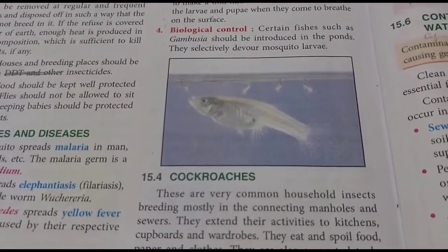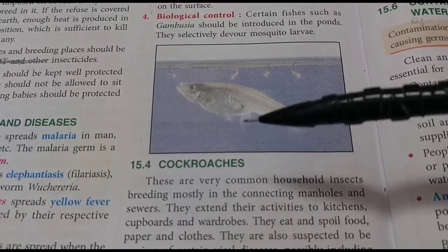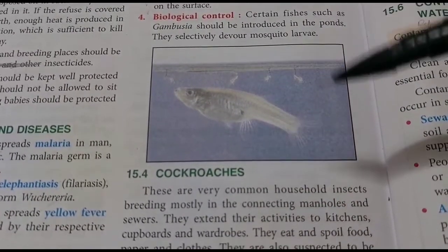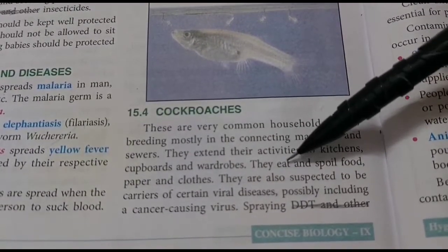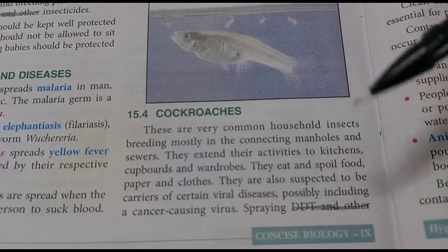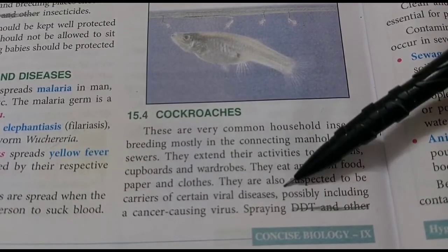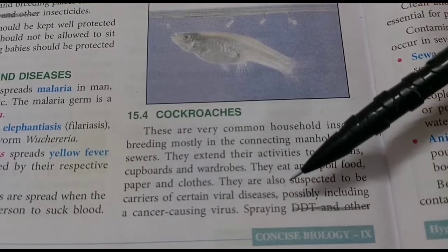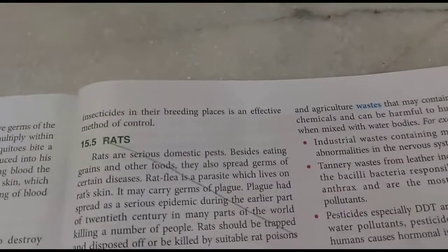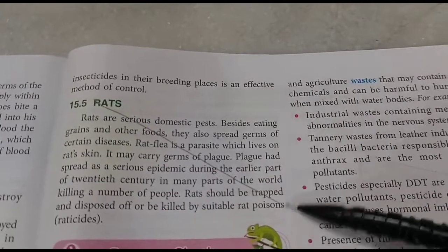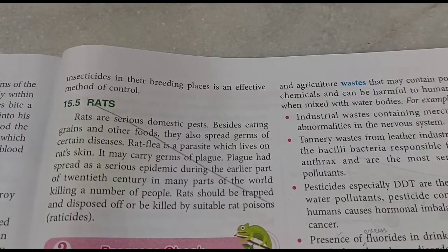Cockroaches are found in households, manholes, and sewers, and also thrive on filth. They can be found in kitchens, cupboards, and wardrobes, spoiling food and clothing. They may spread viral diseases which can cause cancer, so we should spray insecticides in their breeding places. Rats may also spread some dangerous diseases like the plague.